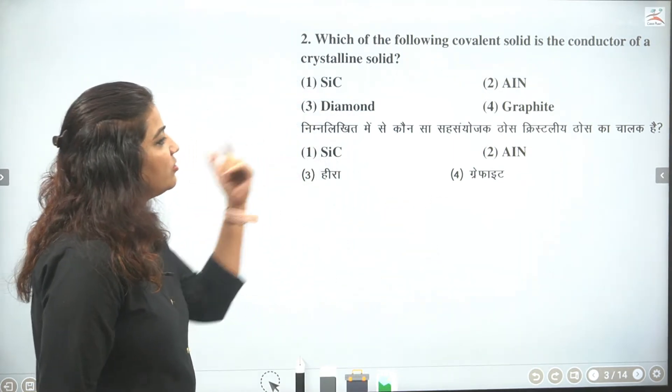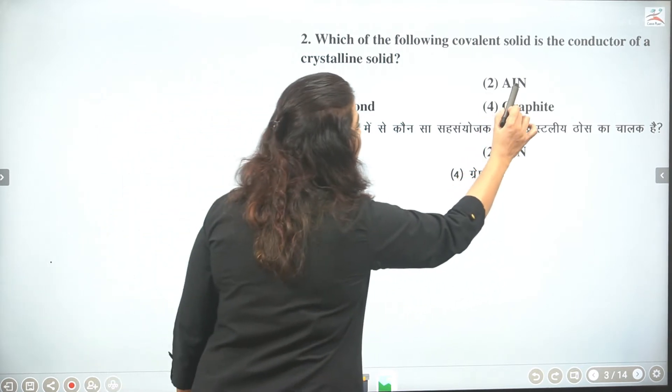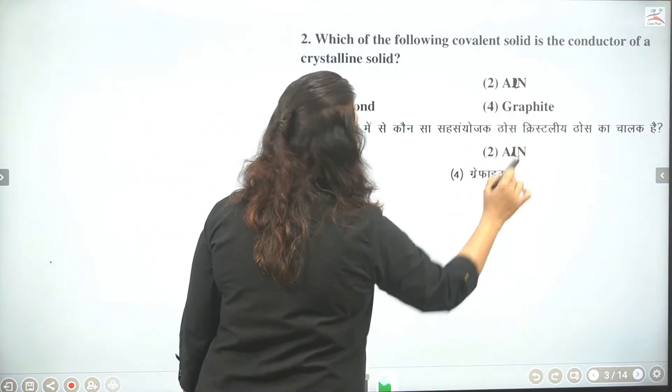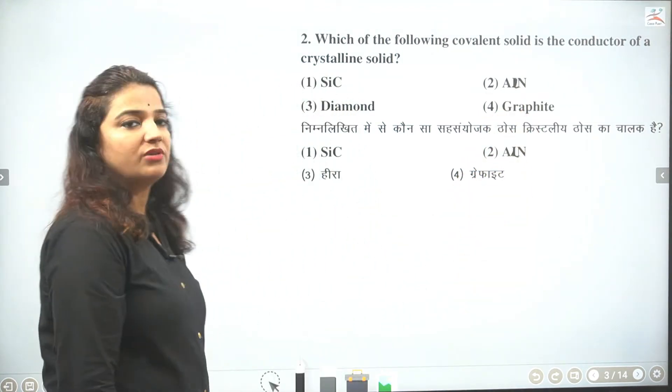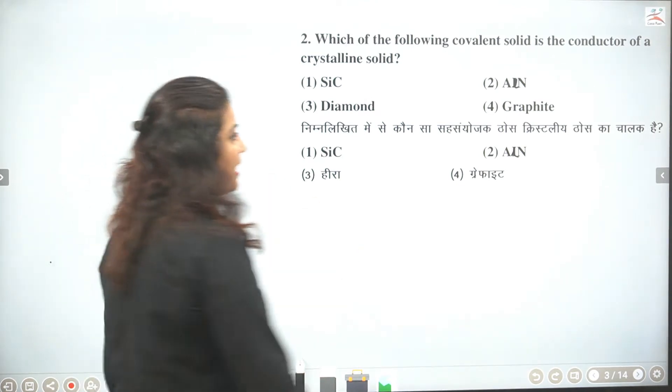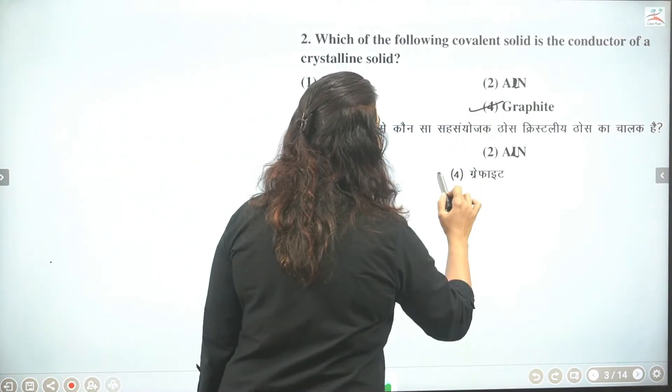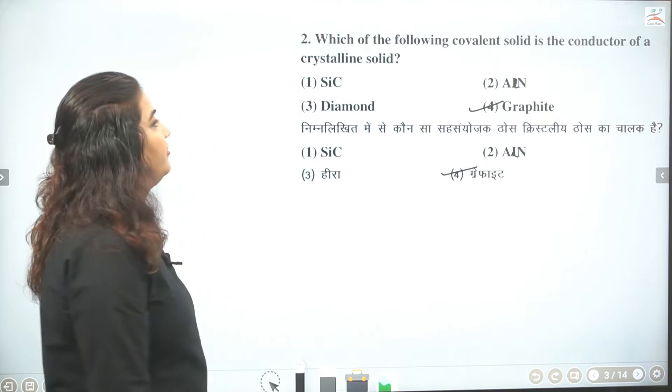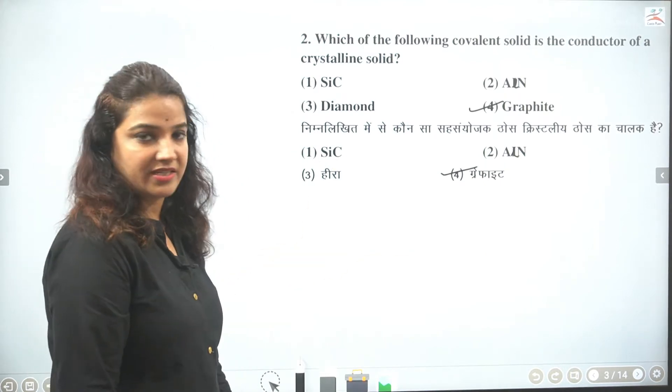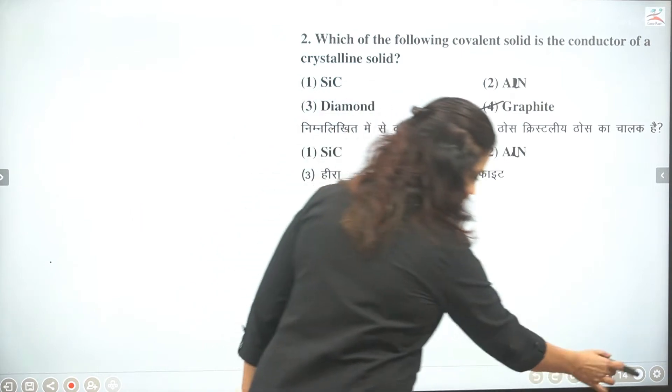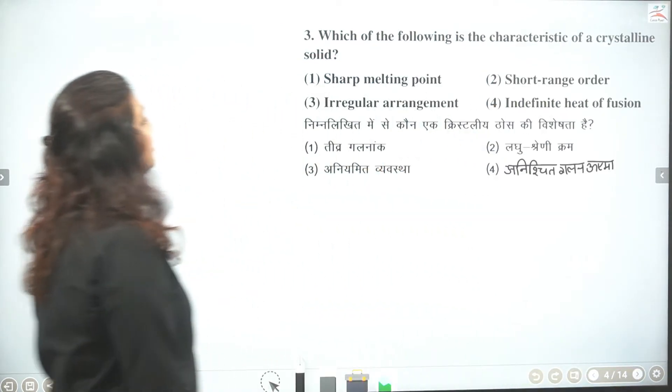Silicon carbide or ALN is aluminum nitride. Then diamond, all are insulators. So we have only one. And that is graphite is the conductor of electricity. And this is covalent crystalline solid.